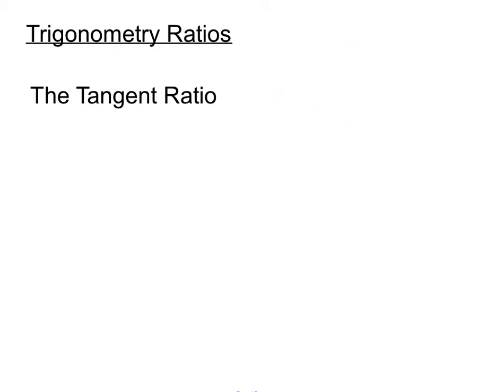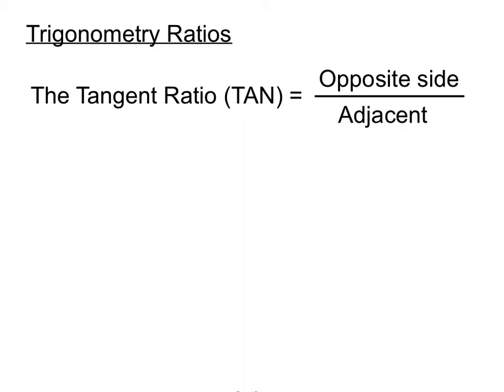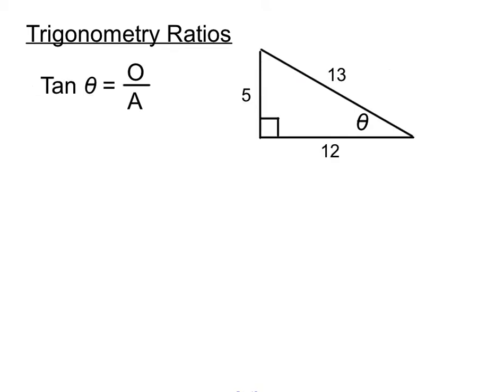The third trig ratio is the tangent ratio, which we call tan. It involves a ratio of the opposite side over the adjacent side, so tan Theta equals O over A, or opposite over adjacent. From the same triangle, naming the sides H, O, and A: the opposite is 5 and the adjacent is 12, so tan Theta equals 5 over 12.